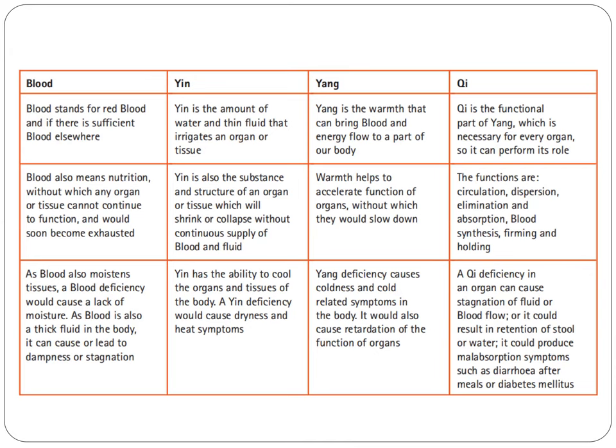Next, we have the yin, which is the amount of water and thin fluid that irrigates an organ or tissue. Yin is also the substance and structure of an organ or tissue, which shrinks or collapses without a continuous supply of blood and fluid. Yin has the ability to cool the organs and tissues of the body. Yin deficiency would cause dryness and heat symptoms.